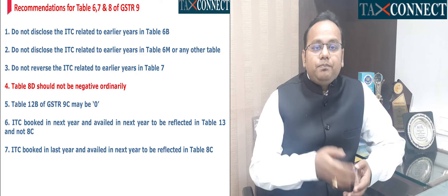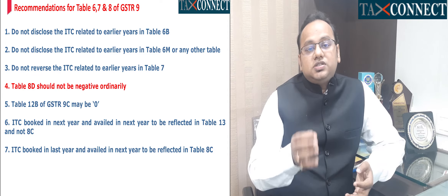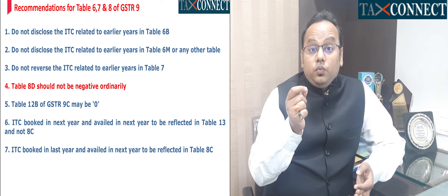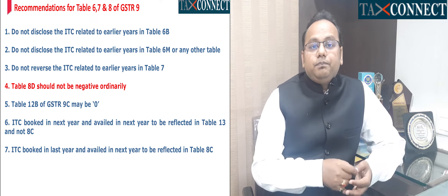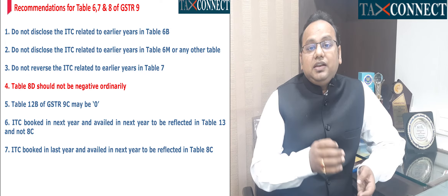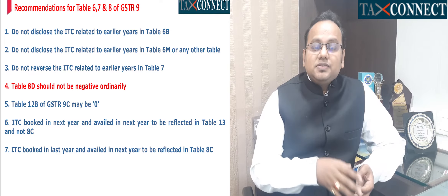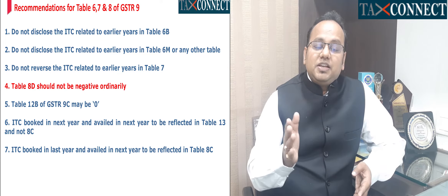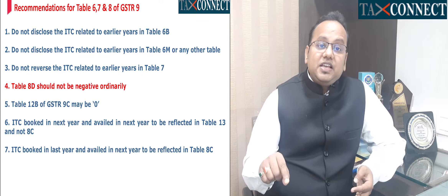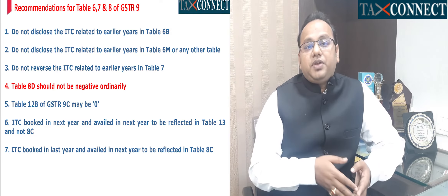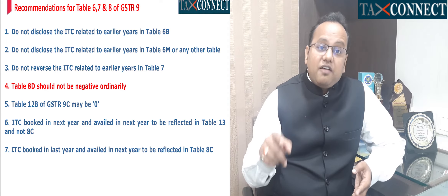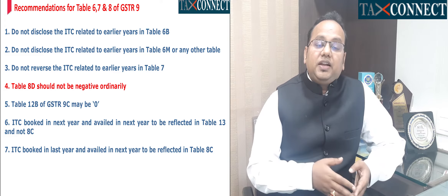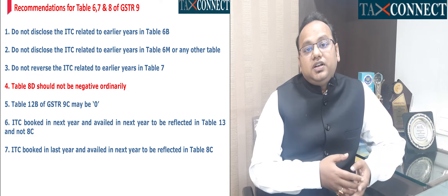In table number 8C, you need to put in those ITC which you have booked — using the word 'booked' specifically — booked in 19-20 in the books of account but the credit of which has been taken up to 30th September 2020. ITC booked after 1st April 2020 and credit also availed after 1st April 2020 would not be reflected in 8C; it would be reflected in table number 13 of GSTR 9.